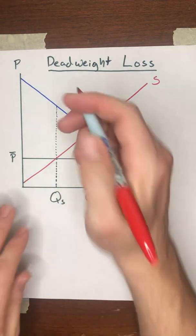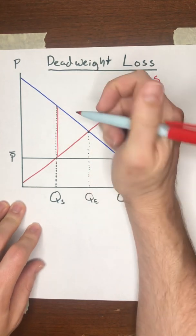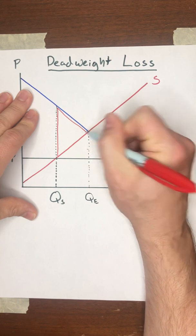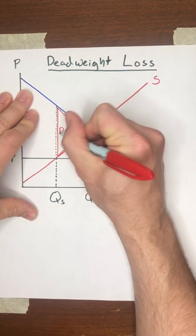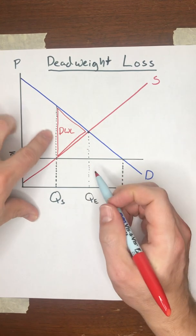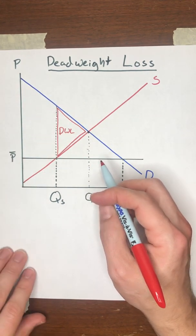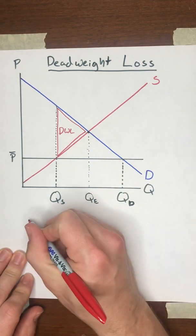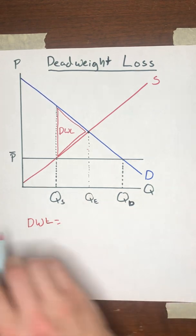That creates what we call, and you hopefully recall this from the lecture on taxes and subsidies, that creates a deadweight loss, or here I'll refer to it as DWL for short. The deadweight loss, it's going to be this area right here. The formula we use for the deadweight loss is the following.